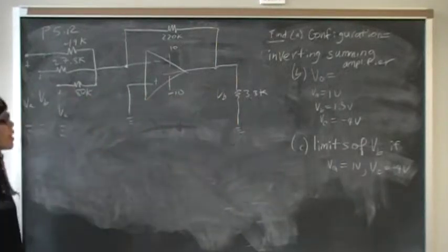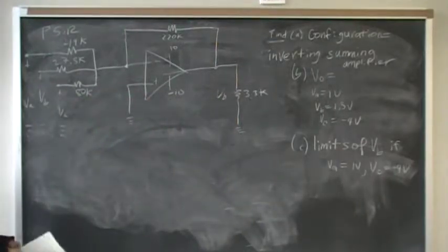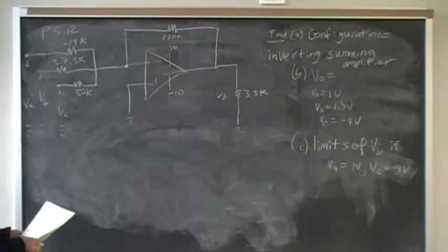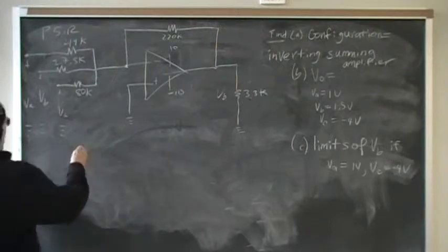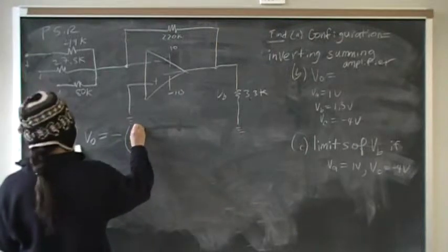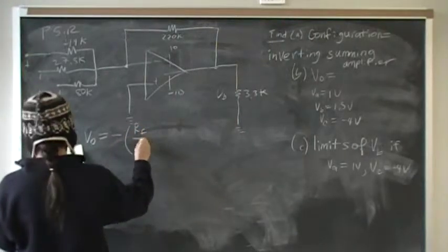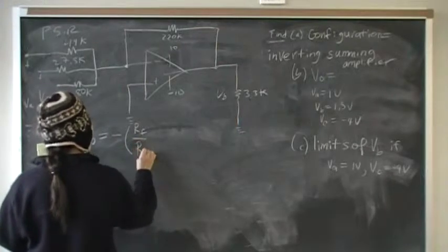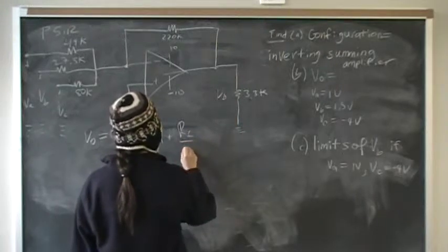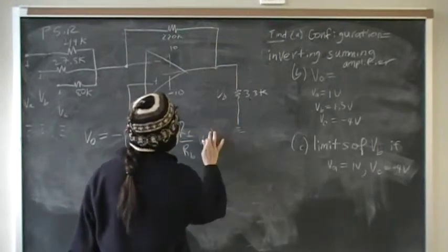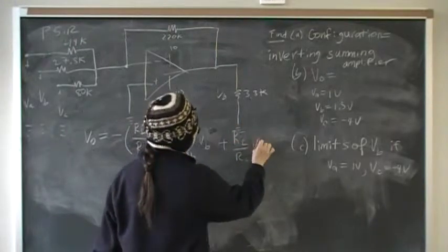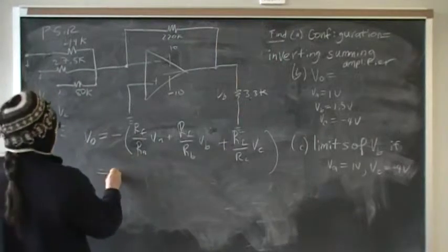Part B: now that we know this is an inverting summing amplifier, we can apply formula 5.14, which is the inverting summing amplifier equation. That equation says Vout equals negative (RF/RA × VA + RF/RB × Vb + RF/RC × Vc). We can now put in the numbers.